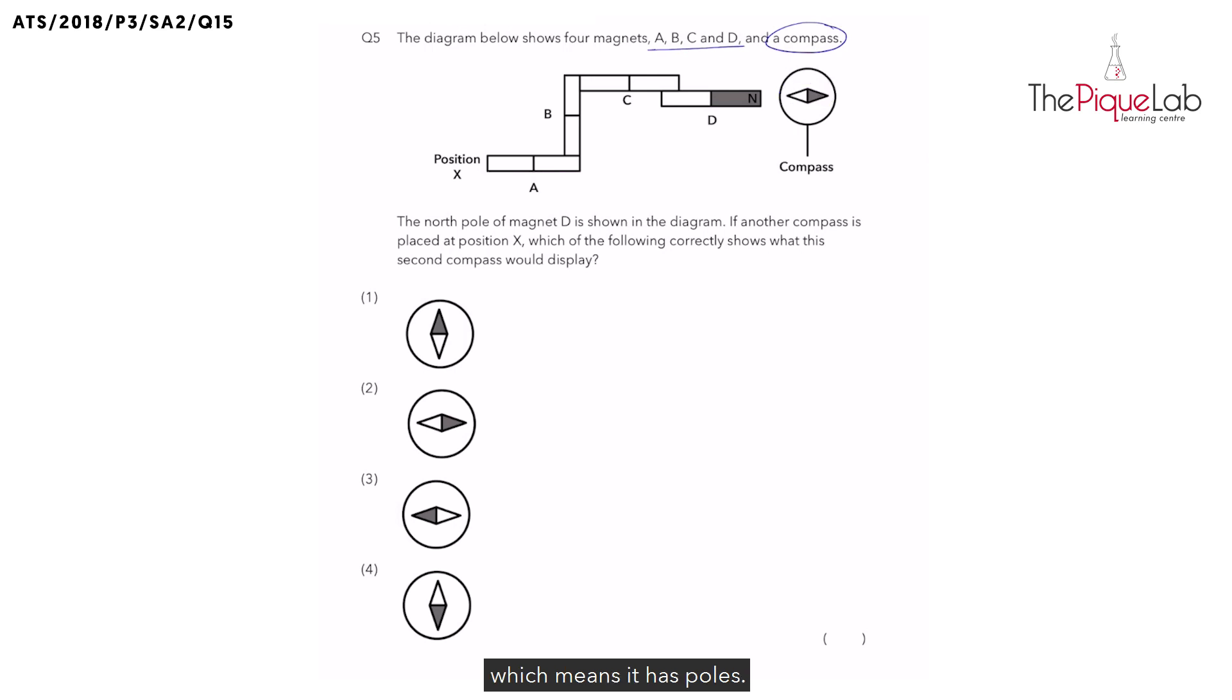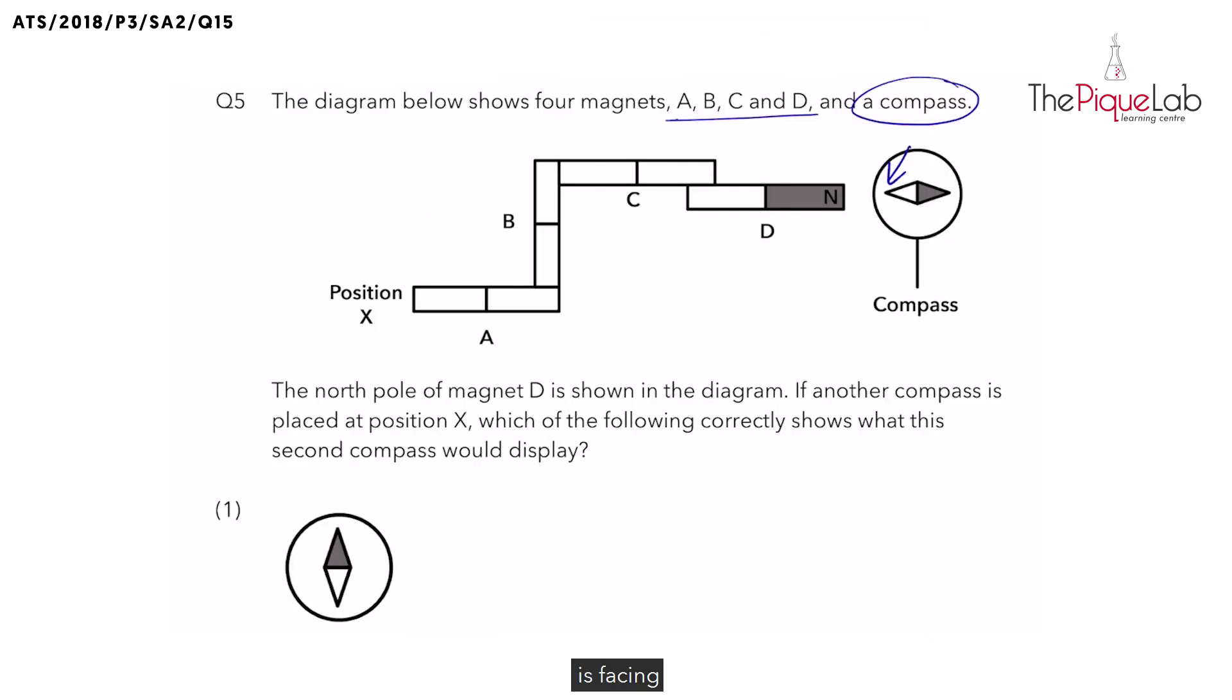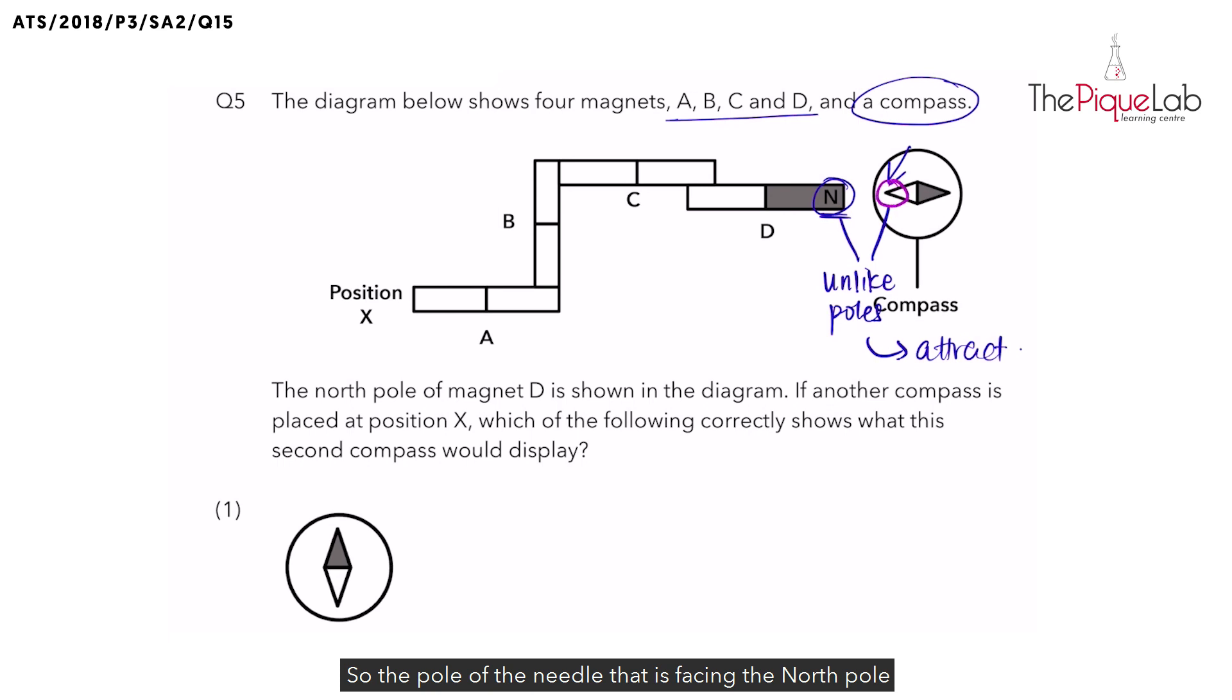So this pole here of the magnet is facing the north pole of magnet T. So which pole do you think would be facing a north pole? To answer this, remember what kind of poles attract? Yes, unlike poles attract. So the pole of the needle that is facing the north pole should be south and therefore the other side of the needle must be north.